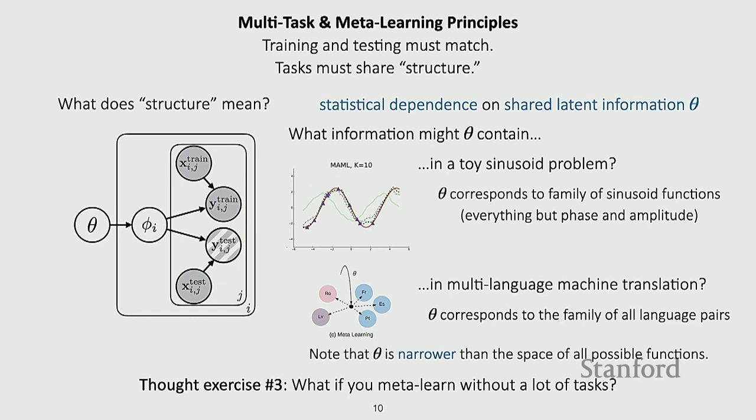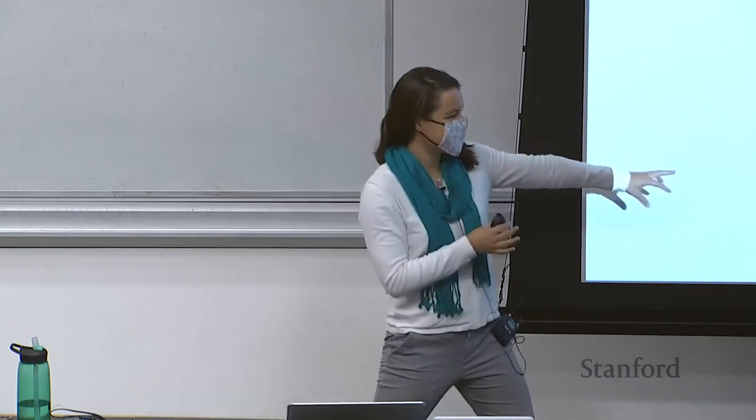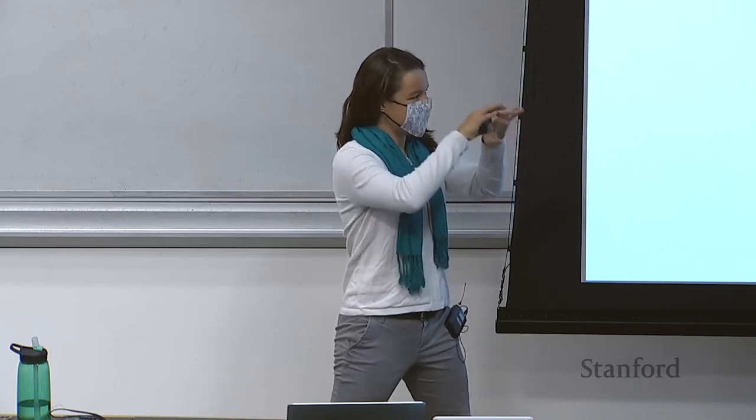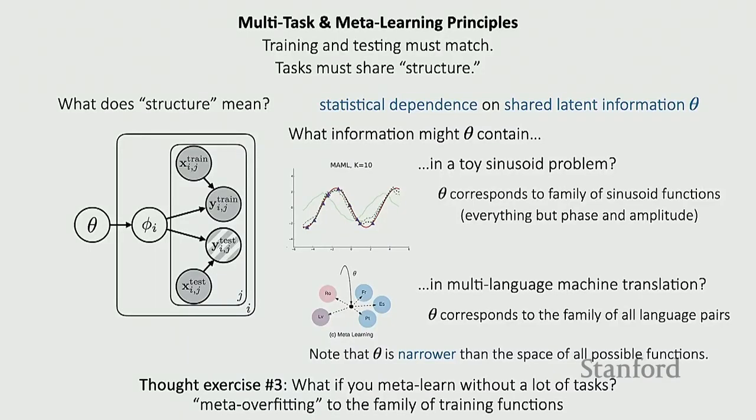One last thought exercise: what if you're doing meta-learning and you don't have a lot of tasks — not a lot of data for a lot of different tasks to meta-train from? In that case, theta is going to be narrower than desired. It's going to overfit and might represent a smaller family of tasks than you ultimately want it to represent — essentially a form of meta-overfitting to the family of training functions rather than the entire family of tasks you care about.